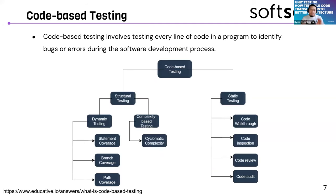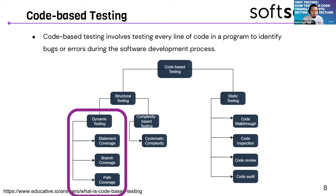Naturally, we can encounter a lot of methods to test our code based on the code itself. We are going to focus on unit testing — specifically this branch we call dynamic testing. We can cover how the statements are executed, the branches, and everything in between.